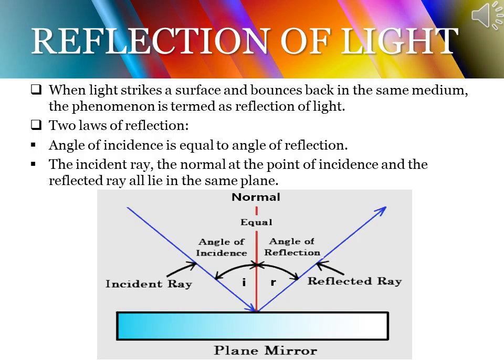Reflection of light is a phenomenon when a ray of light strikes a surface and bounces back in the same medium. We have done the laws of reflection. The very first law is that the angle of incidence is equal to the angle of reflection. The second law states that the incident ray, the normal at the point of incidence, and the reflected ray all lie in the same plane.